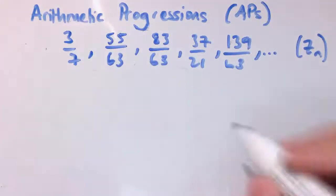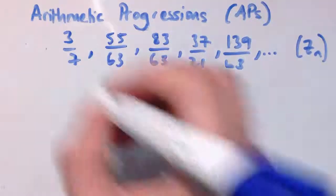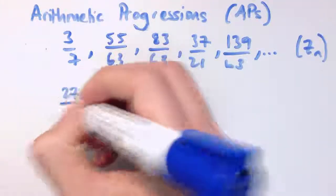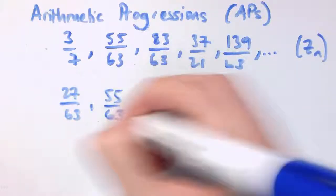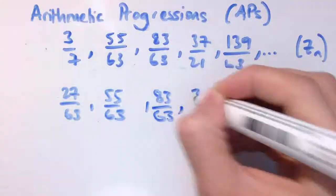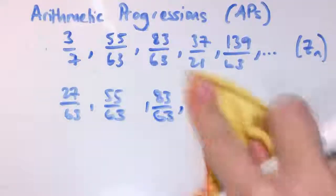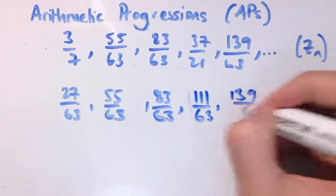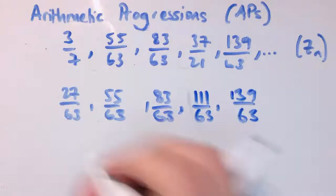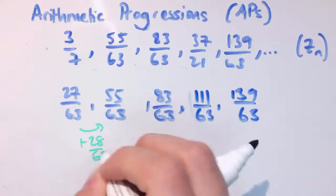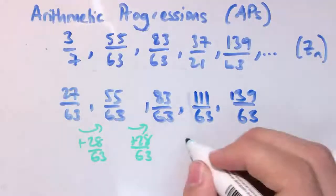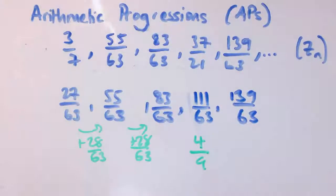Here's another sequence that might not obviously look like an arithmetic progression, but it is. Putting all the fractions over 63 gives 27/63, 55/63, 83/63. For 37/21, multiply top and bottom by 3 to get 111/63, and then 139/63. Now you can see that going from one term to the next we're adding on 28/63, and dividing top and bottom by 7, that's 4/9. So it's actually adding 4/9 from one term to the next.